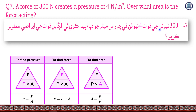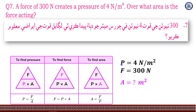We have been given the pressure and force; we need to find the area. The pressure given is 4 newton per meter square, and the force is 300 newtons. The area is unknown. We will use the formula and solve for area. Using the same formula, we can find the answer.